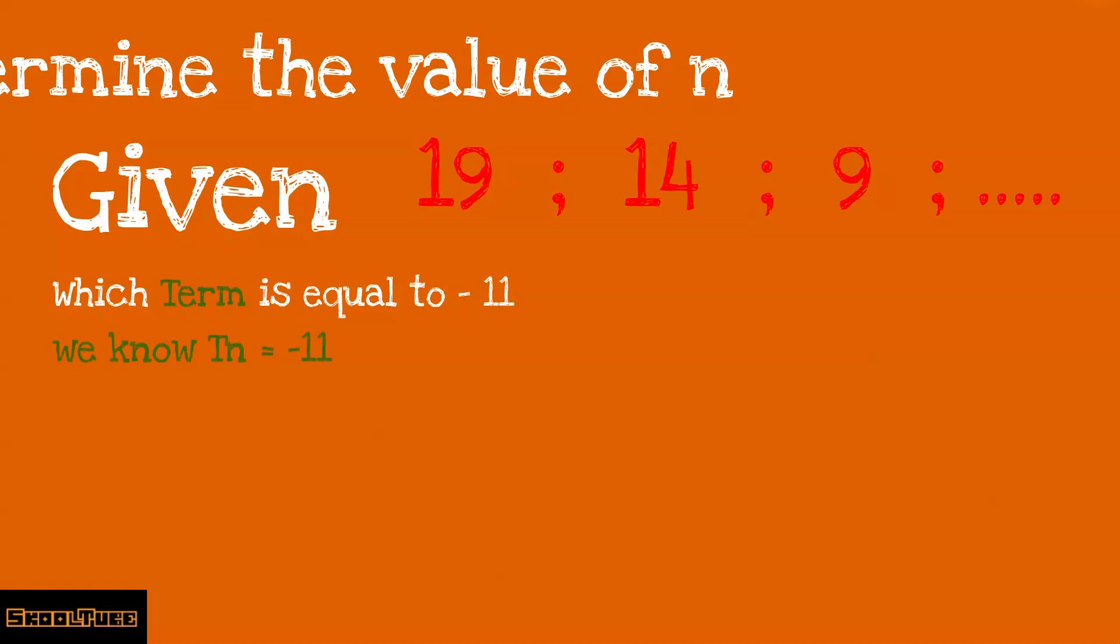Now let's look at the sequence. What is the lowest common difference between these terms? The difference between 19 and 14 is minus 5 and the difference between 14 and 9 is minus 5. Now we know the sequence is arithmetic. So we can use the general term Tn equals a plus (n minus 1)d, whereby Tn equals minus 11.